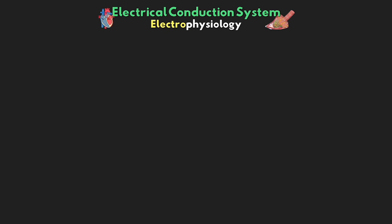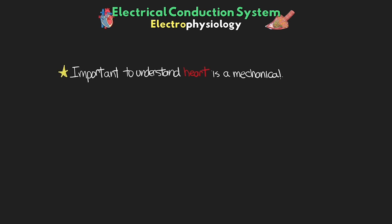As mentioned when we were talking about our coronary blood supply, it is important to understand that our heart is a mechanical pump. Along with the necessary blood supply bringing oxygen and electrolytes that are vitally needed, there's also another important part that is what actually makes everything work — and this is the electrical conduction system.